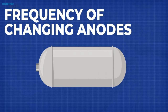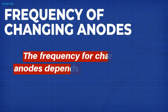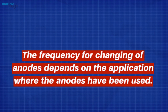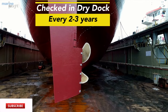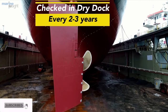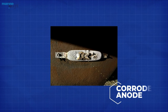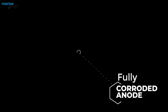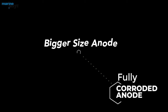Anodes have to be changed only after they are completely decayed. The frequency for changing of anodes depends on the application where the anodes have been used. In case the anodes are attached to the ship's hull, then they are to be checked during dry dock, which takes place after two to three years. If the anodes are found completely corroded, then anodes of bigger size should be fitted. For a fully corroded anode, it means that the material used was of poor quality or a large amount of material is required to protect the hull.